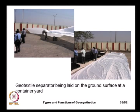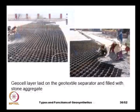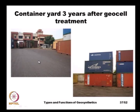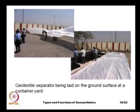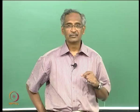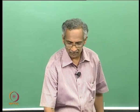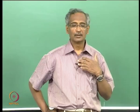The construction process involved first laying a geotextile separator layer, then placing the geocell and filling it with aggregate. The constructed surface was absolutely flat. These photographs were taken three years after the geocell treatment of the same area where mud waves had previously formed, and the entire yard is flat, allowing free movement of container vehicles.